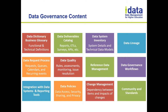Data lineage is an attribute of your data system related to deliverables — it describes how data is flowing between systems. You can start at a high level showing what systems are connected, then get down to table and field level. ETL documentation is typically where you would define that lineage.